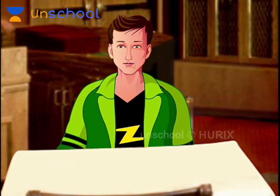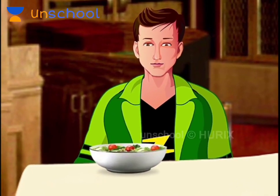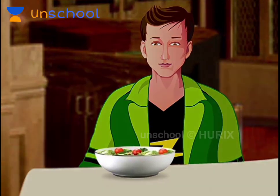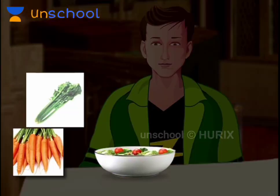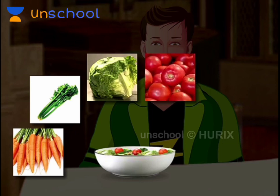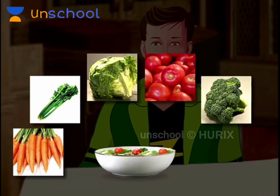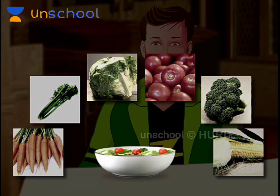James has ordered a yummy salad. What is there in the salad? There is carrot, celery, lettuce, tomato, broccoli and corn. Which parts of plants do these ingredients come from?